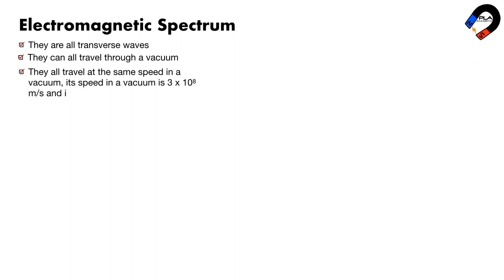Electromagnetic spectrum. All electromagnetic waves have the following properties: they are all transverse waves, they can all travel through a vacuum, and they all travel at the same speed in a vacuum. Its speed in a vacuum is 3 × 10⁸ meters per second, and is approximately the same in air.